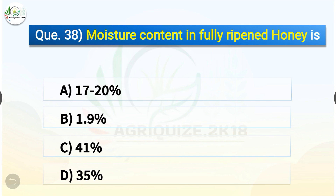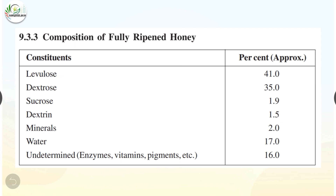Question number thirty-eight: Moisture content in fully ripened honey is which of the following? The options are: 17 to 20%, 1.9%, 41%, or 35%. The correct answer is option A — 17 to 20%. The composition of fully ripened honey: levulose ~41%, dextrose ~35%, sucrose 1.9%, dextrin 1.5%, minerals 2%, water 17%, and undetermined enzymes, vitamins, pigments etc. ~16%.